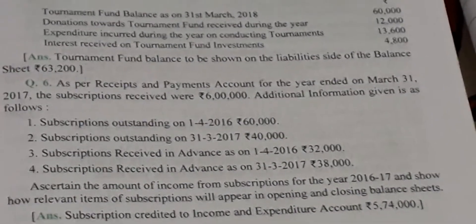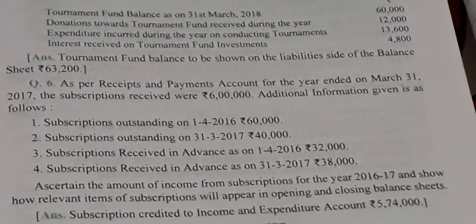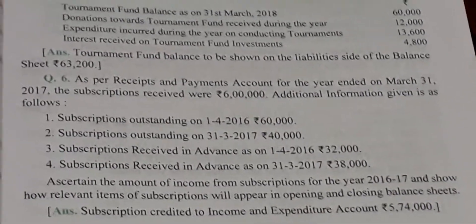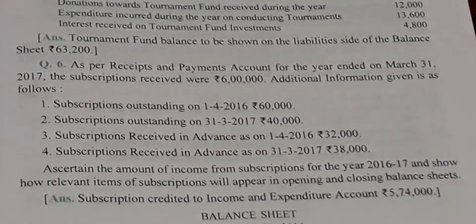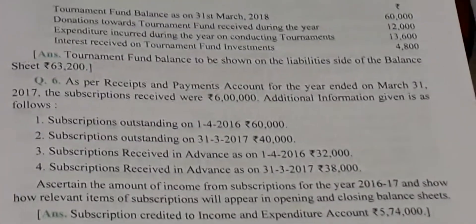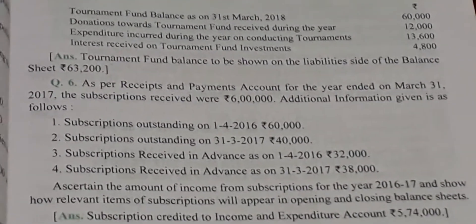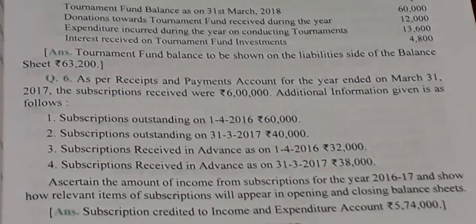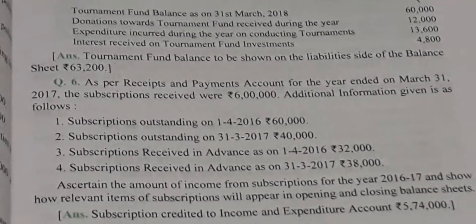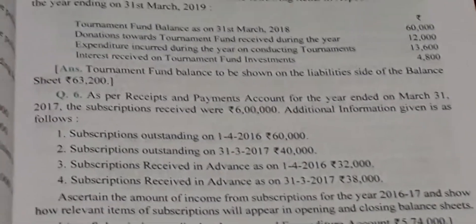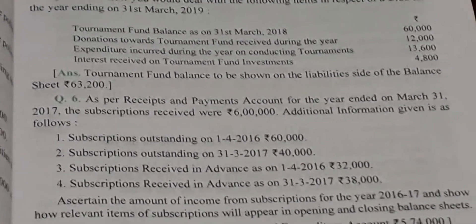Now question number 6: As per the receipts and payments account for the year ended 31st March 2017, subscriptions received were Rs. 6,00,000. Additional information: Subscription outstanding on 1-4-2016 is Rs. 60,000. Subscription outstanding on 31-3-2017 is Rs. 40,000. Subscription received in advance as on 1-4-2016 is Rs. 32,000. Subscription received in advance as on 31-3-2017 is Rs. 38,000. Ascertain the amount of income from subscription for the year 2016-17.